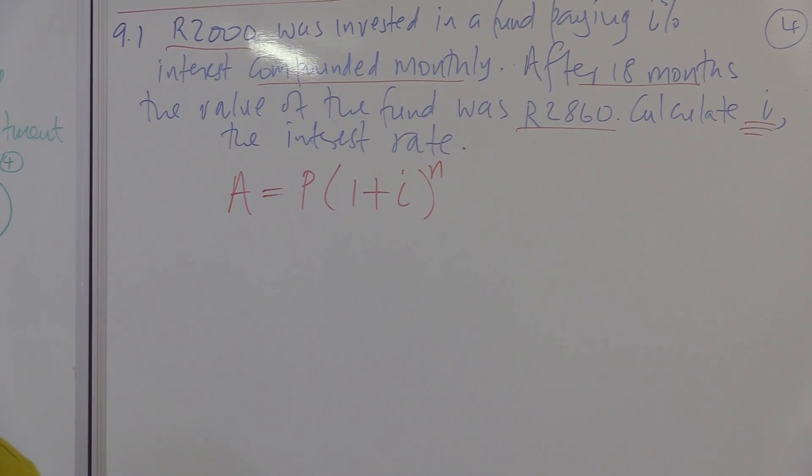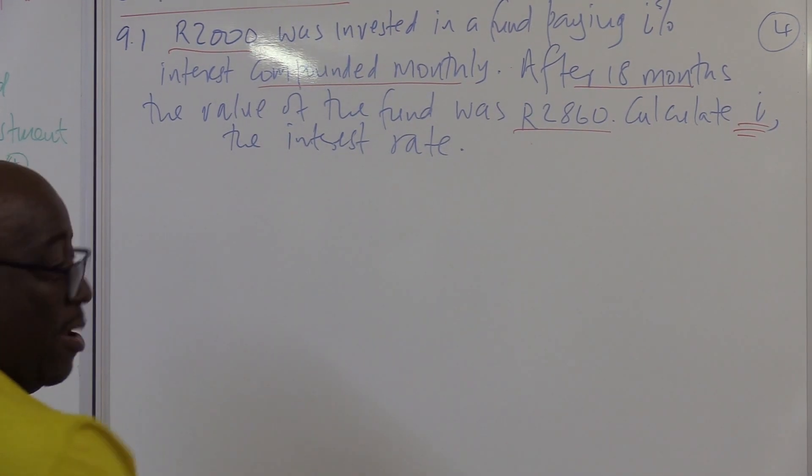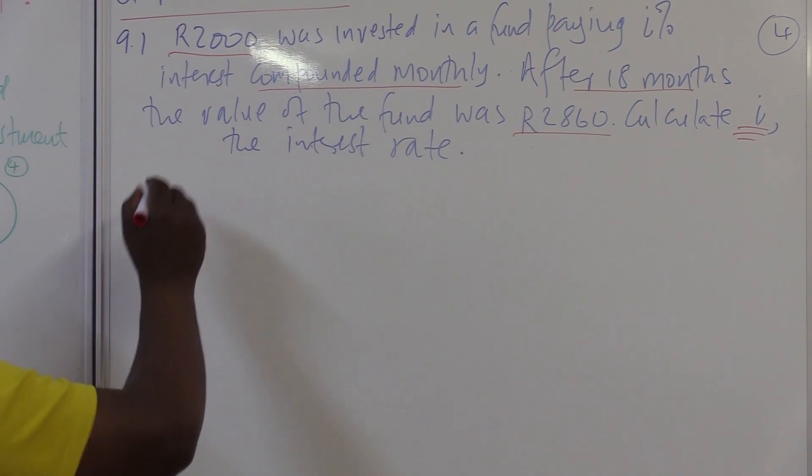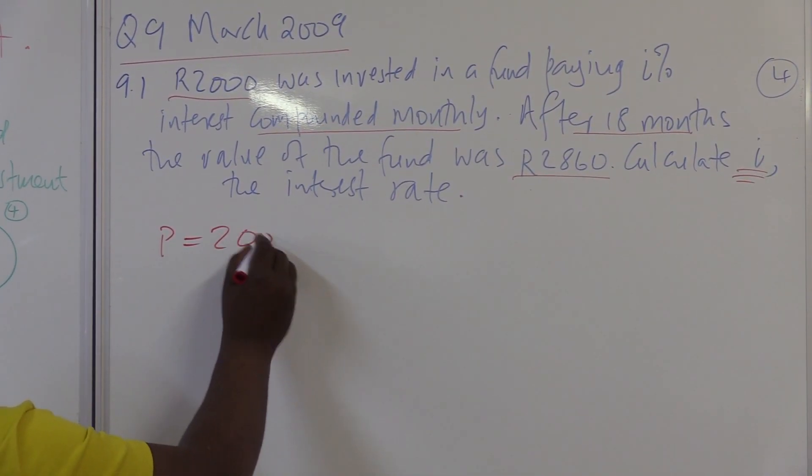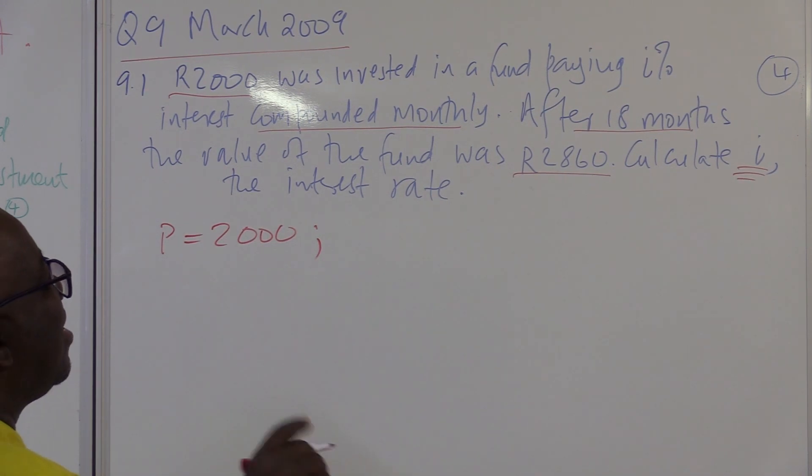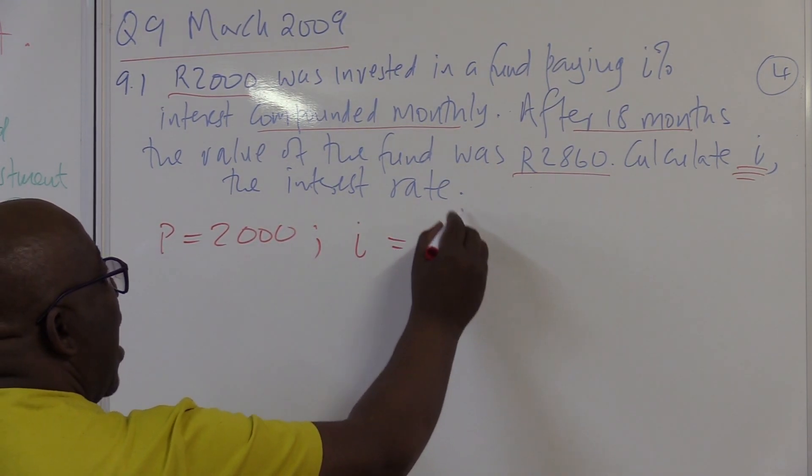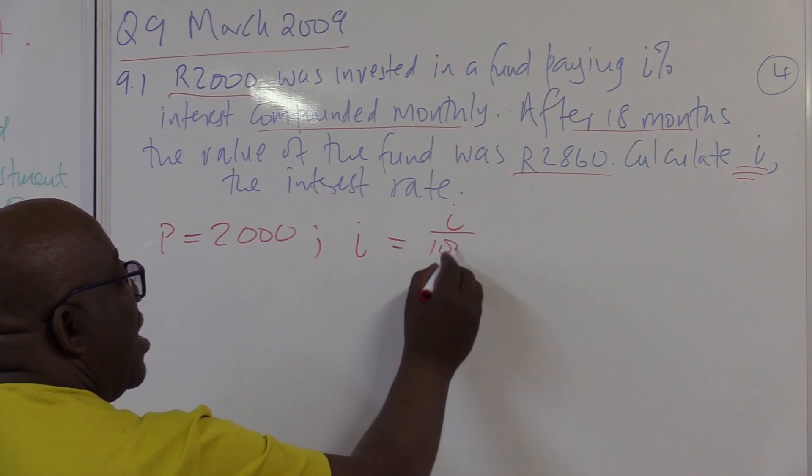But maybe before we even write a formula, let's collect our data first. I believe in collecting data it will make our life easier. This amount is invested, so it is the value of P, that is what we're investing: P equals 2000. What's invested in a fund paying I percent? I see my I in this particular case is I percent, I over 100.